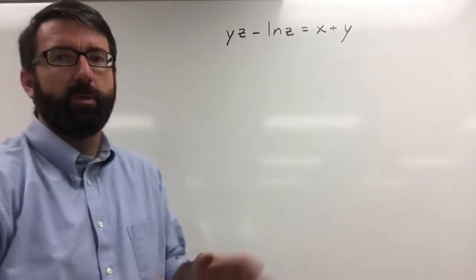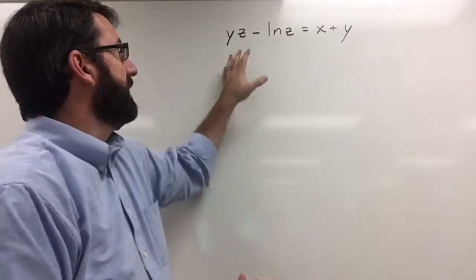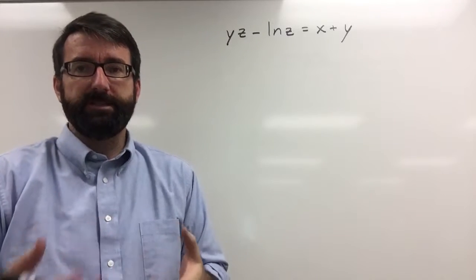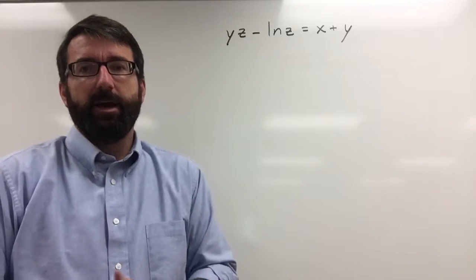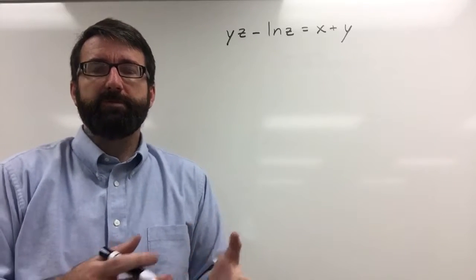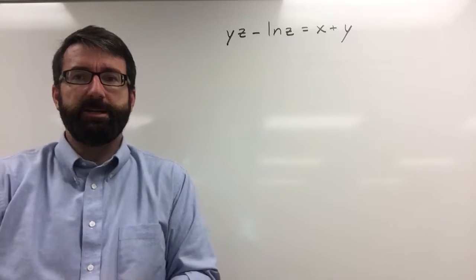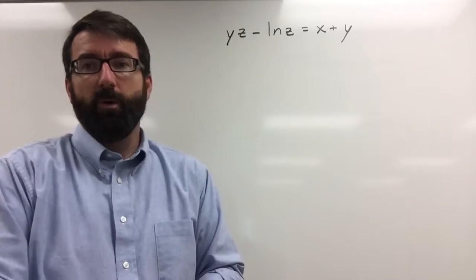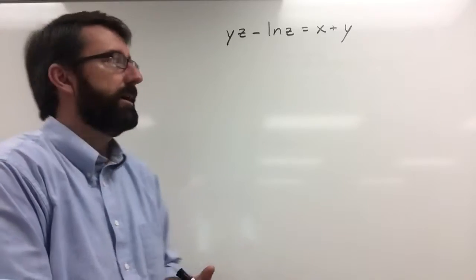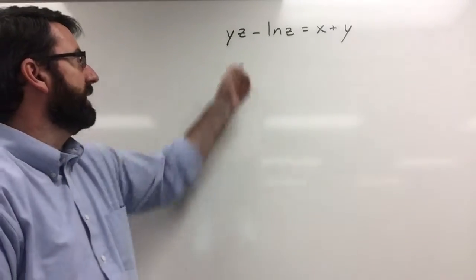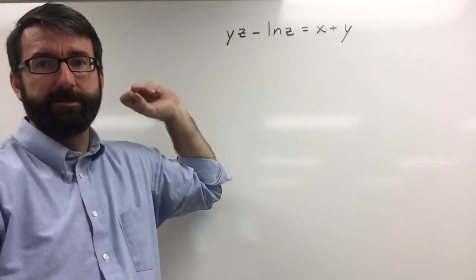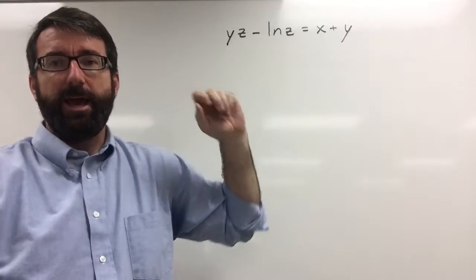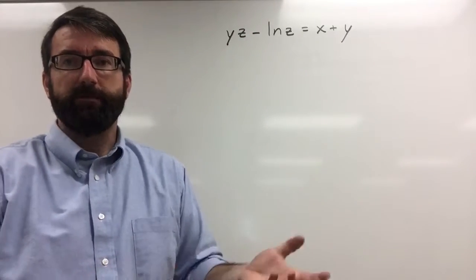For this example we're given this equation and we're asked to find the partial derivative of z with respect to x. For this problem we're going to use implicit differentiation, which works the same way as it did for ordinary derivatives. We're going to hold y constant and we're going to treat z as a differentiable function of x.